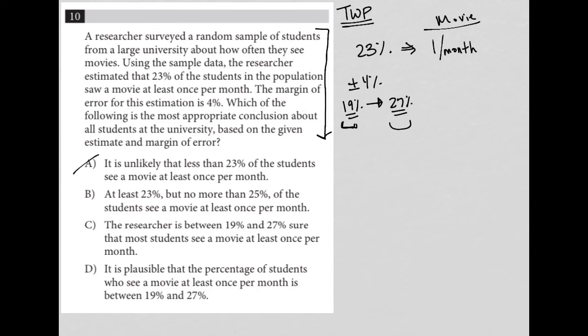Choice B says at least 23%, but no more than 25% of the students see a movie at least once per month. Again, that is wrong because we can go up to 27% and we can definitely go below 23%.